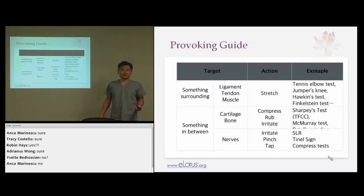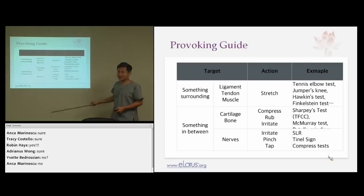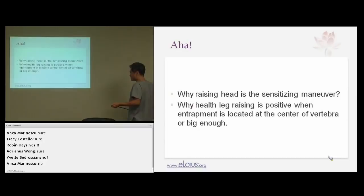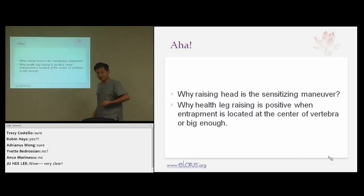Almost at the end: we finished structures surrounding the joint — ligament, tendons, muscles, tested by stretching — and tissues inside the joint — cartilage, disc, meniscus — tested by compressing and rubbing. Final questions: why is raising the head a sensitizing maneuver for the SLR? Because by bending the neck you pull the dura mater of the spinal cord, increasing pressure that irritates nerve root entrapment. And why is the healthy-side leg raise positive when entrapment is in the middle or large enough? Think about it.